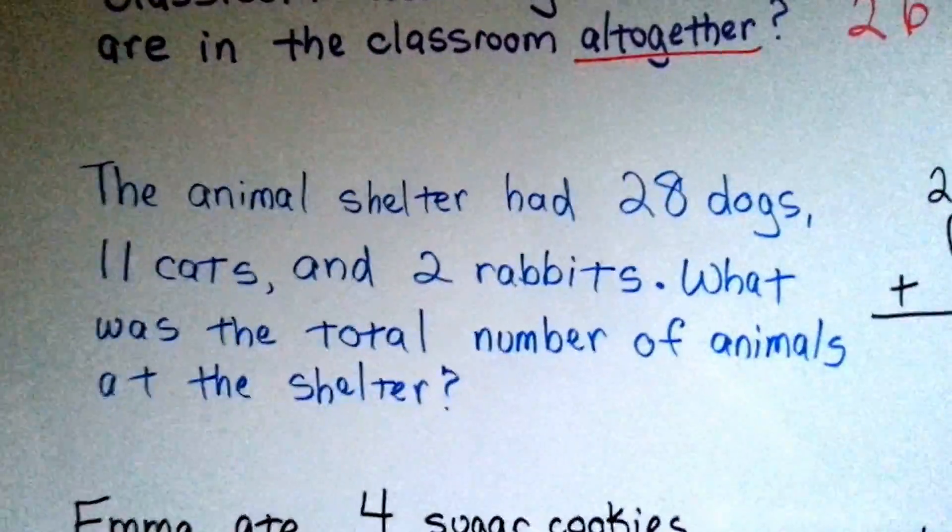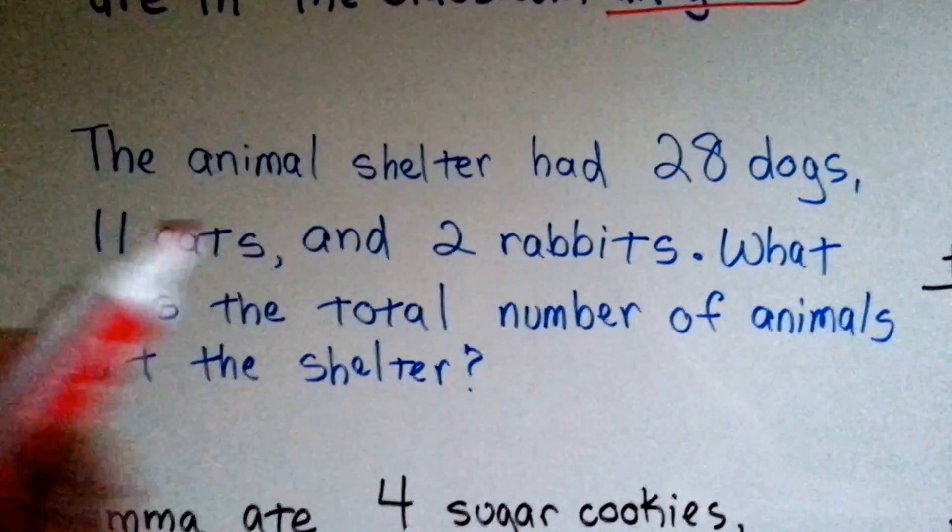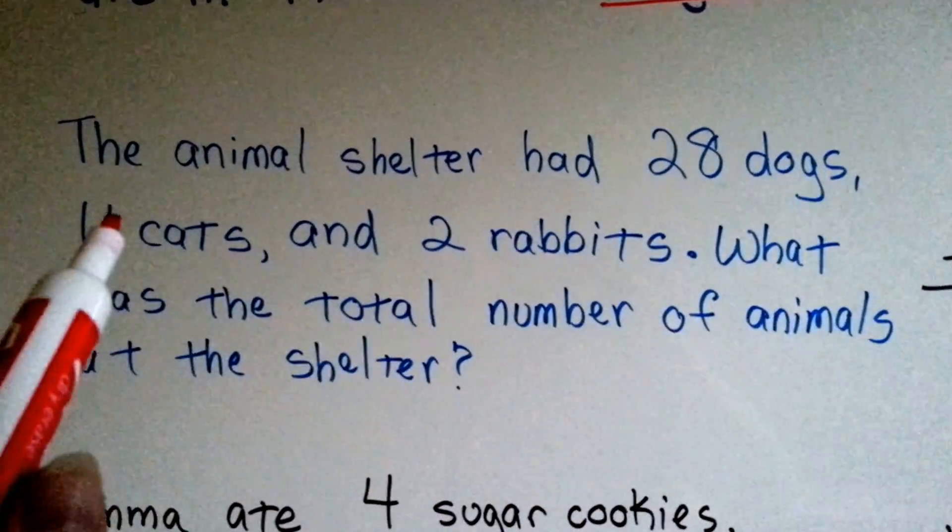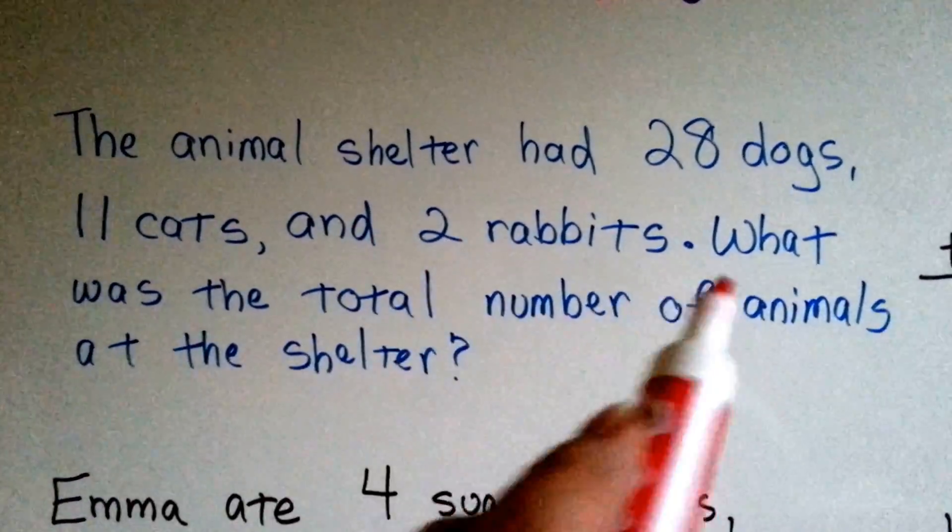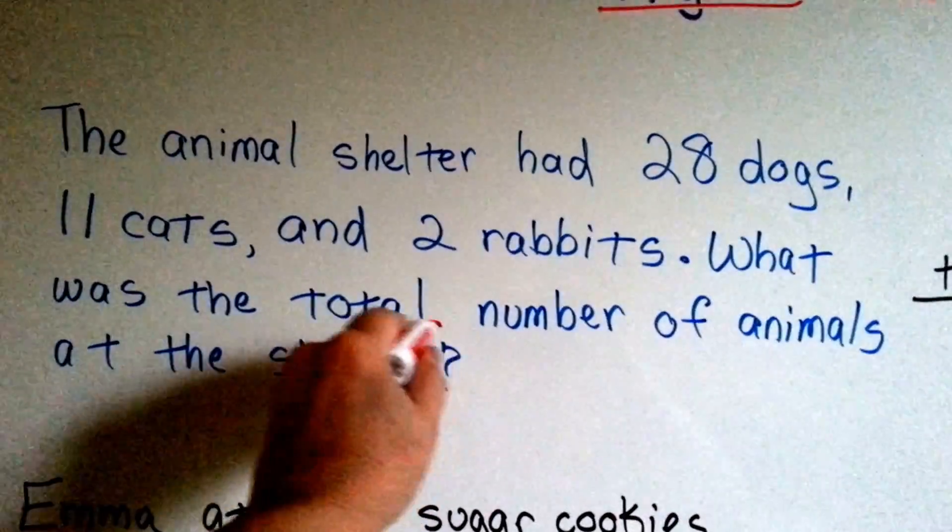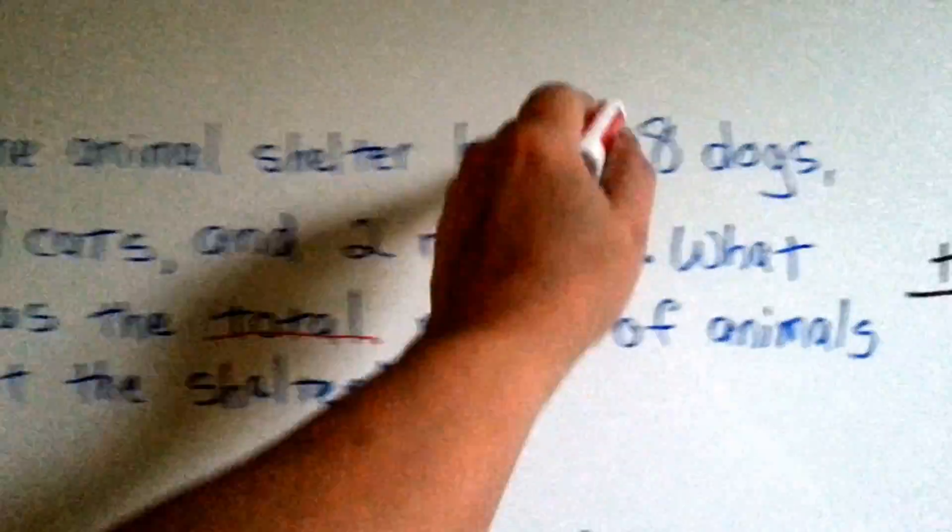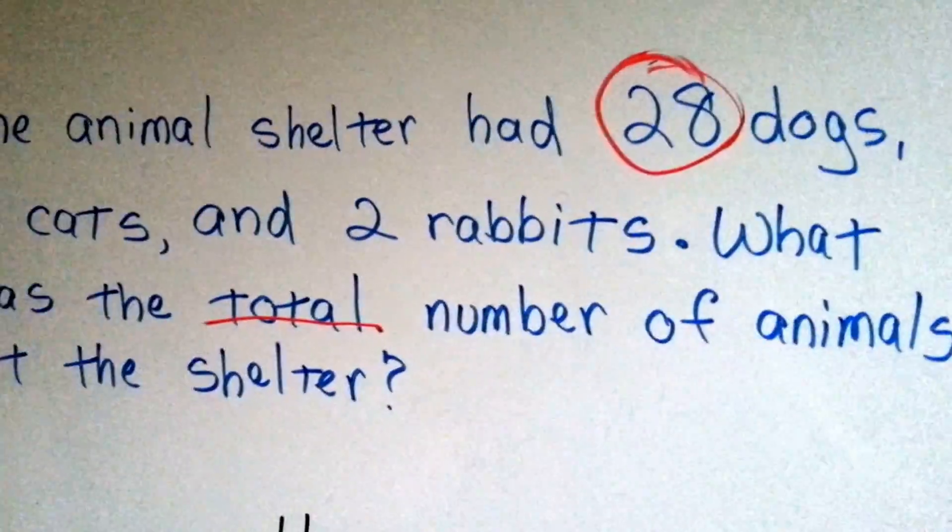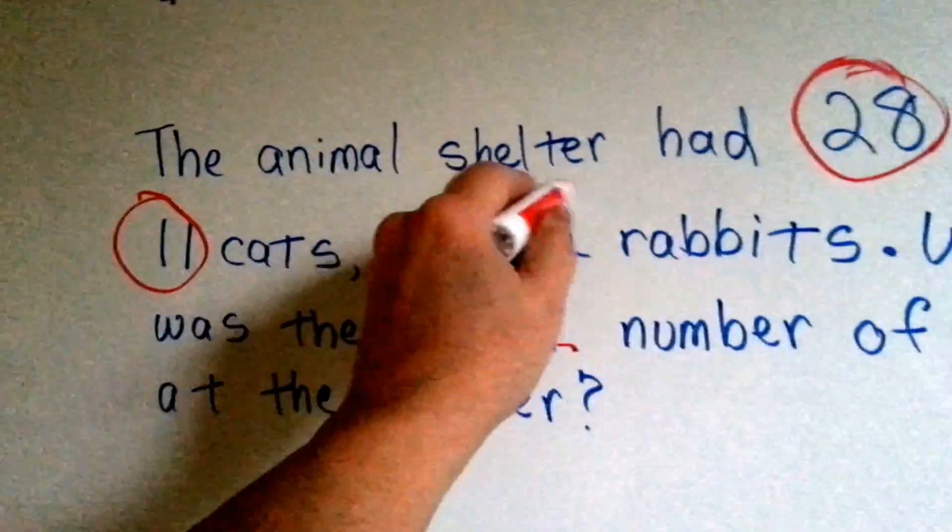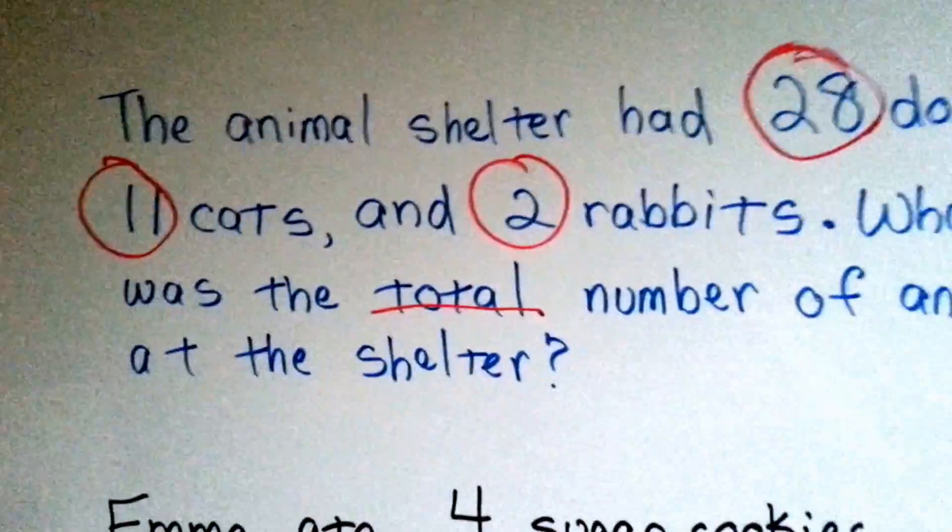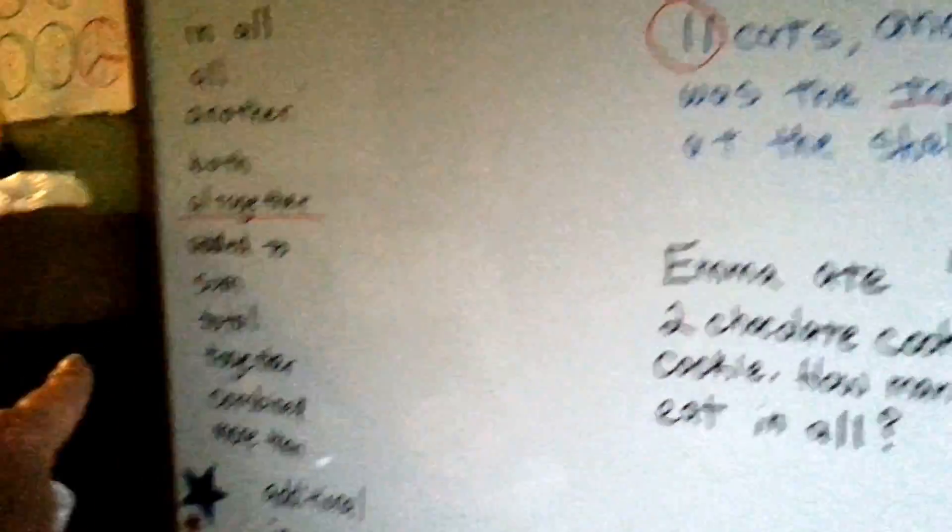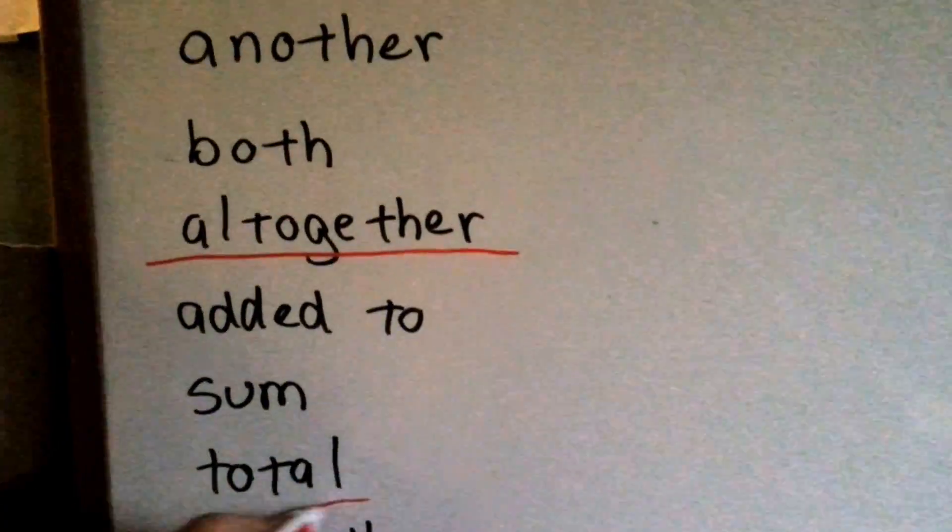How about this one? The animal shelter has twenty-eight dogs, eleven cats, and two rabbits. What was the TOTAL number of animals in the shelter? Find the important words, which are the numbers, and the word TOTAL. TOTAL is one of our addition words over here.